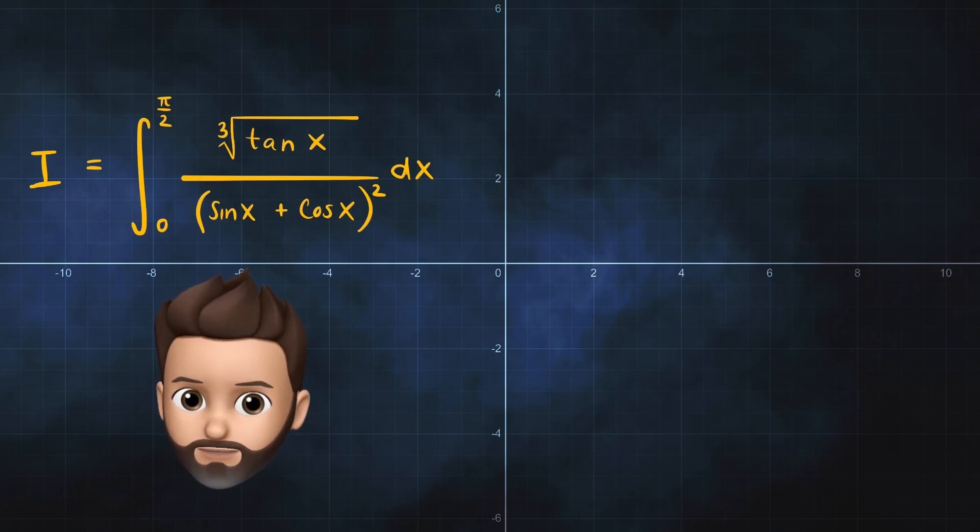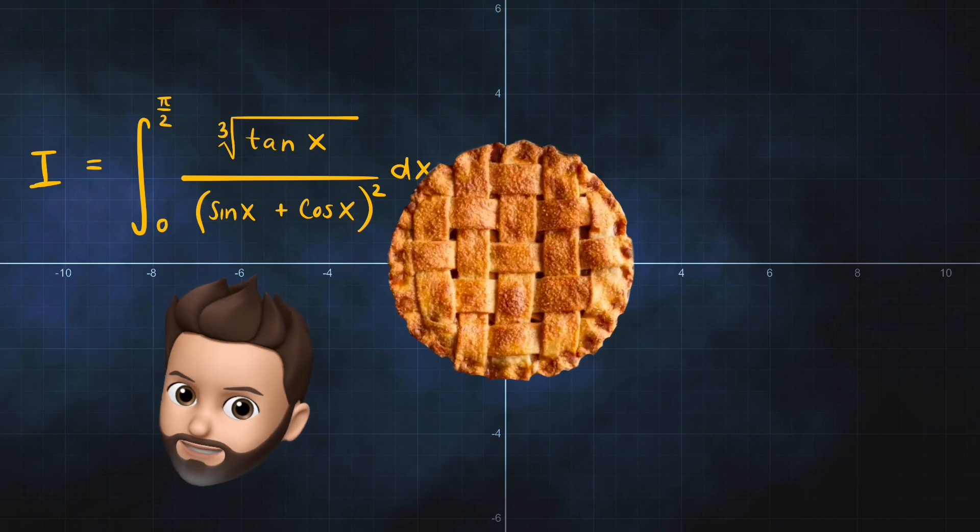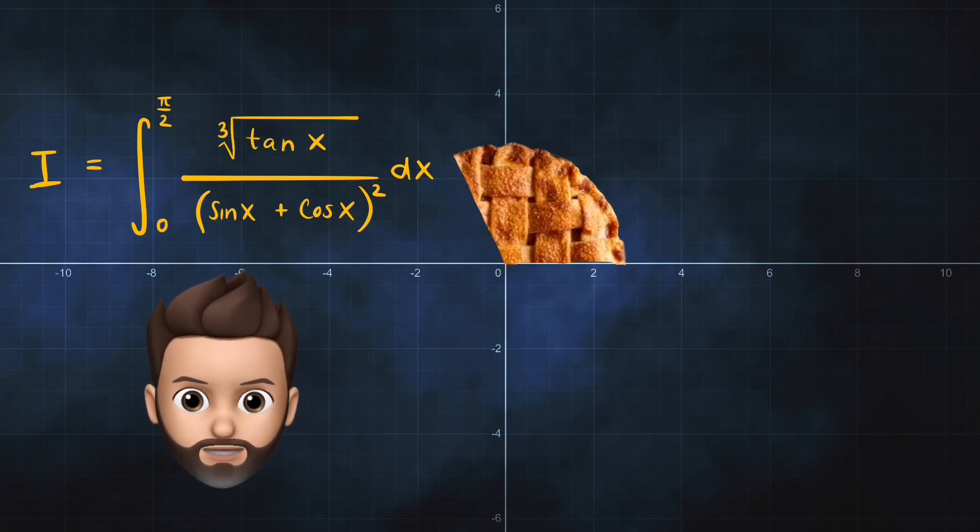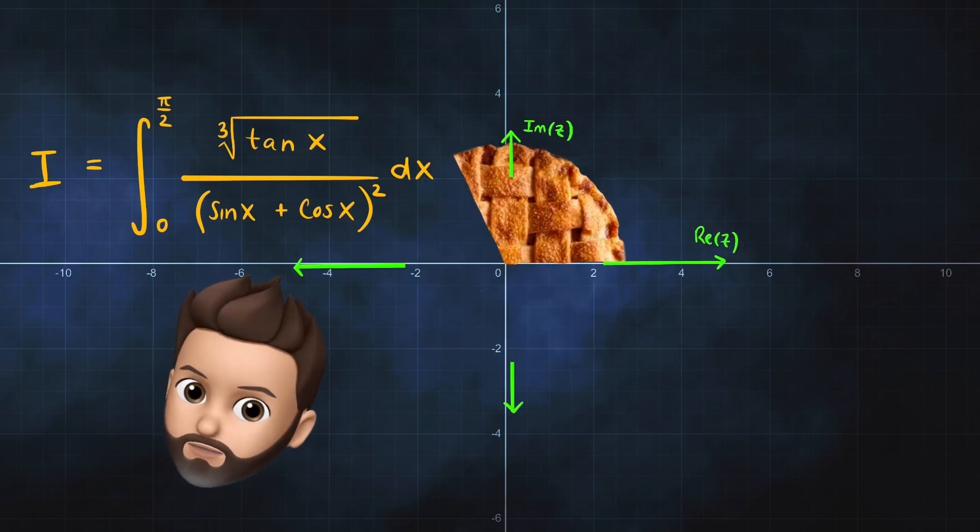After thinking about it for some time, it occurred to me, 4 minutes, there's got to be a better way. And then it occurred to me, there is. And all we need to do is take a slice of pie in the complex plane.